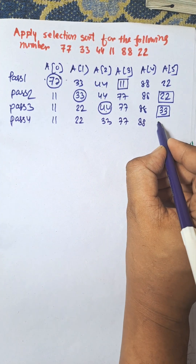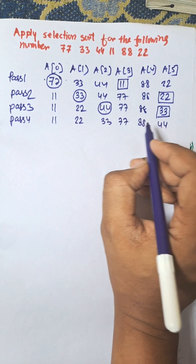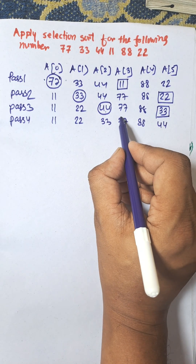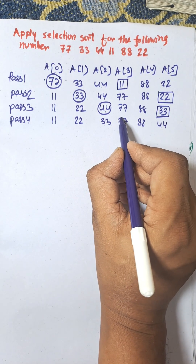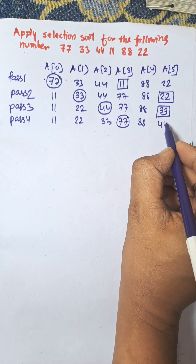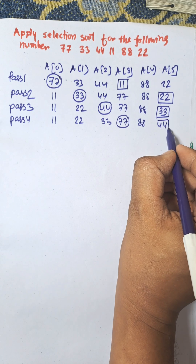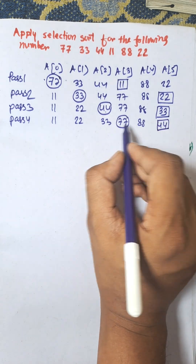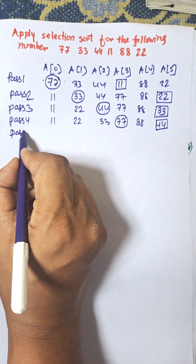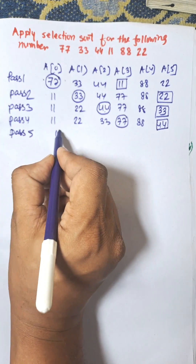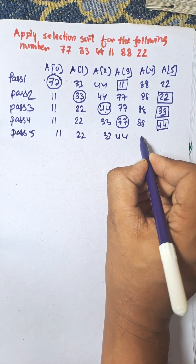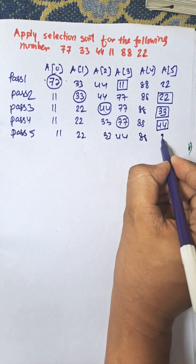From the remaining three numbers, the next position is the fourth position and the smallest number is 44. Now 44 and 77 are swapped, giving: 11, 22, 33, 44, 88, 77.